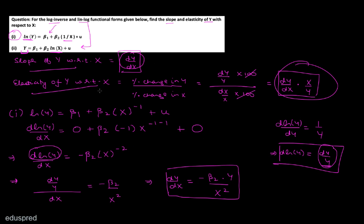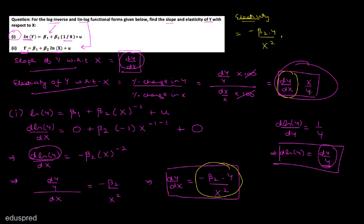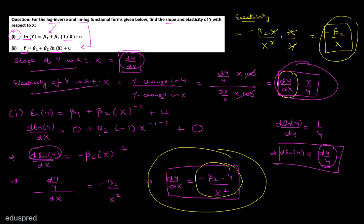Now we find the elasticity of y with respect to x. Finding elasticity after finding the slope is simple, since elasticity is just slope multiplied by x/y. So the elasticity = (−β₂·y/x²) × (x/y). The y's cancel and one x cancels, giving elasticity = −β₂/x. So for the first model, the slope is −β₂·y/x² and the elasticity is −β₂/x.